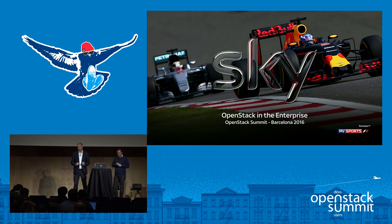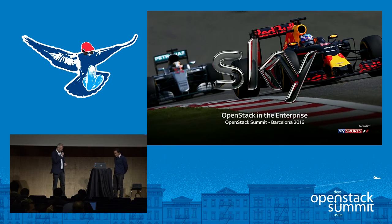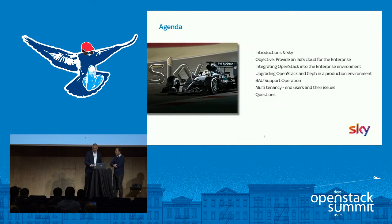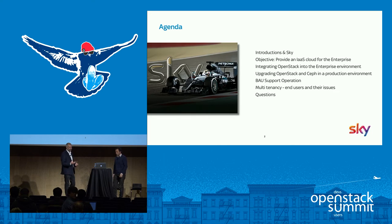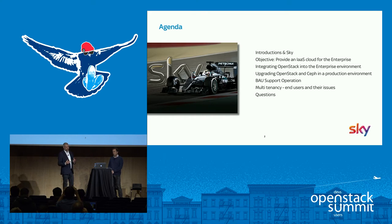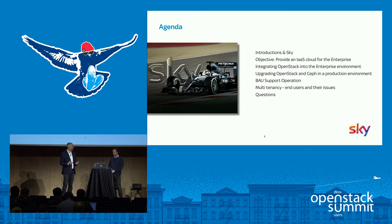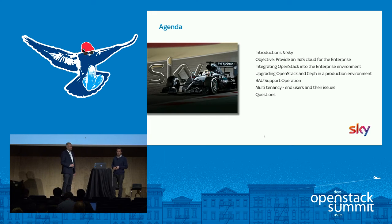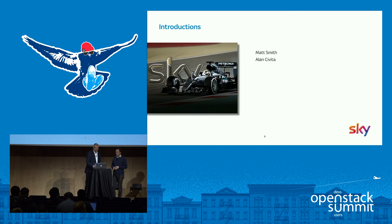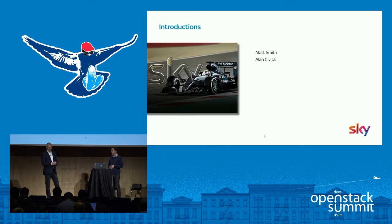I'm here today from Sky to do a presentation on OpenStack in the enterprise. We did some introductions and background about Sky, its multiple businesses, and our objective to deliver cloud and why we needed it. Being an enterprise, we needed to integrate into the usual enterprise ecosystem. My colleague will talk about upgrading OpenStack, running it as a BAU support operation, and our multi-tenancy users and their issues. I'm Matt Smith and this is Alan Chivita. We both work at Sky in the OpenStack team, and for the past two years we've architected, delivered, grown, and supported the OpenStack platform.